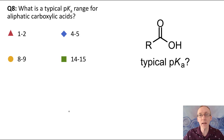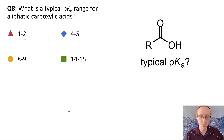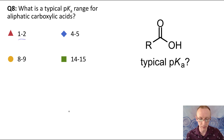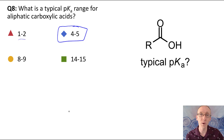Question eight: what is a typical pKa for a carboxylic acid? A pKa of one to two would be quite a strong acid — much stronger than a normal carboxylic acid with no electron-withdrawing groups. That would be maybe a carboxylic acid with a number of electron-withdrawing fluorines attached, like trifluoroacetic acid. Four to five is the typical range for an ordinary carboxylic acid — acetic acid has a pKa of 4.74.